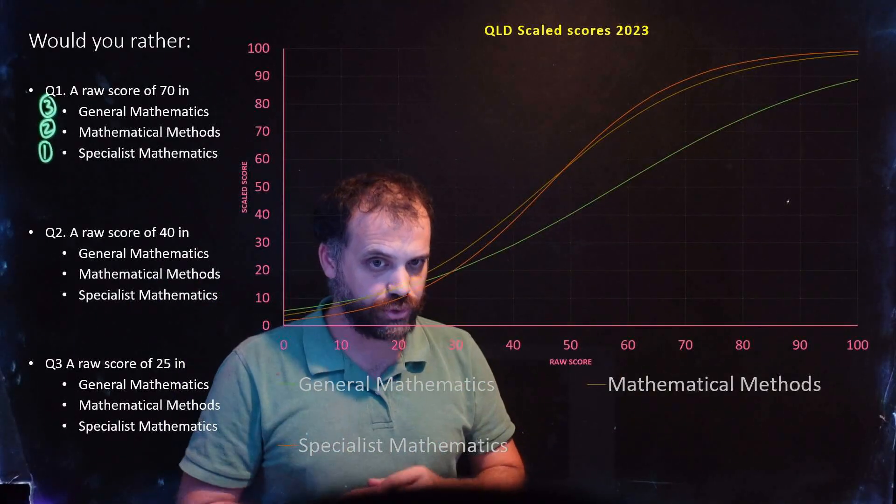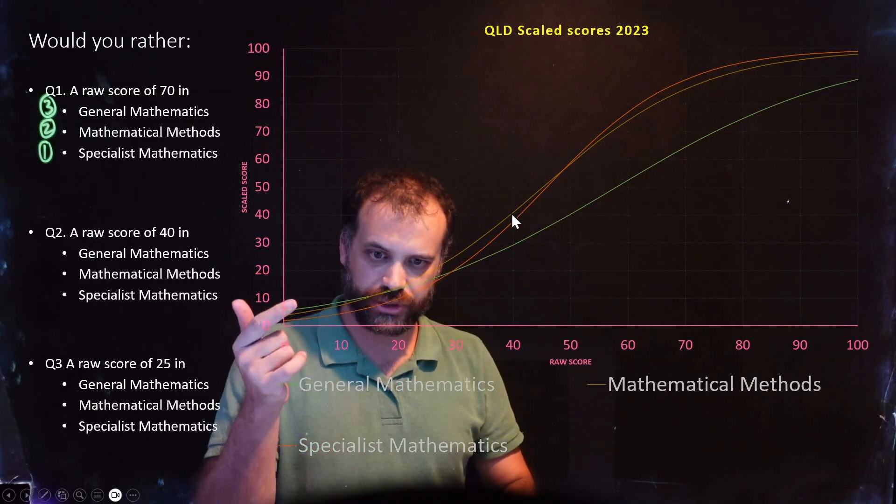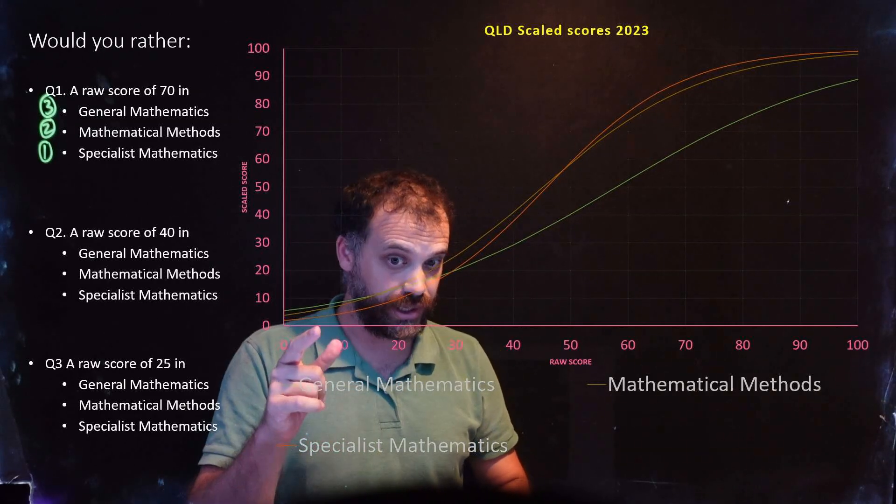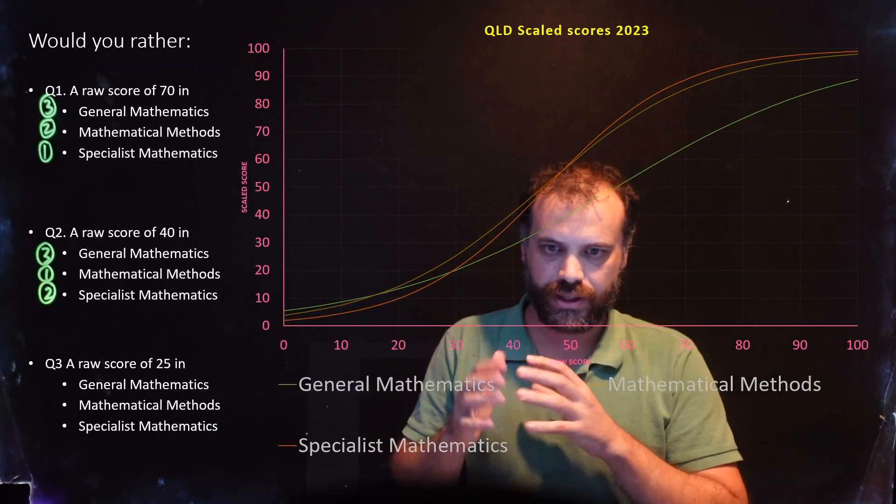Admittedly, a raw score of 40 is fairly low. But once we get into the 40s, what's happened? Specialist is now in second place. Methods is in the lead, and general still down the bottom.